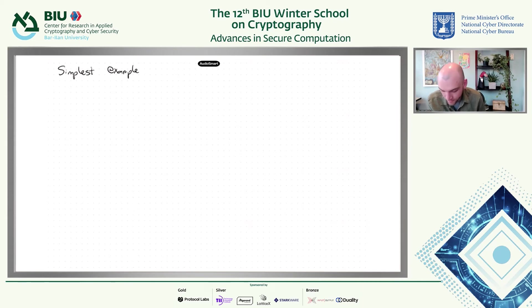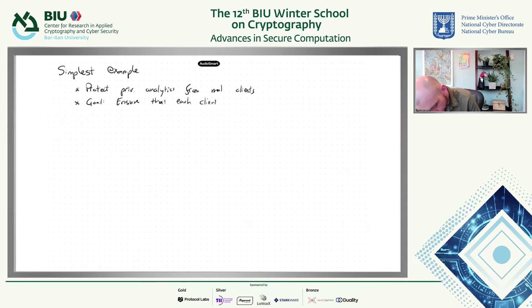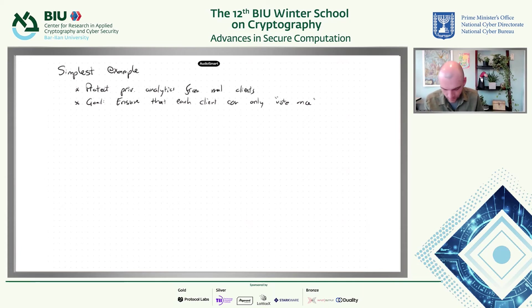This is how to protect the private analytics from malicious clients. The goal is to ensure that each client can only vote once — one client, one vote. Each client only has one homepage, they only get to vote once, and they can't mess up the computation apart from picking whatever homepage they want.